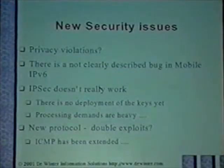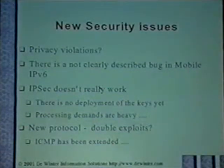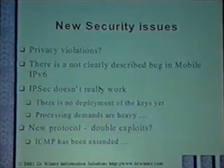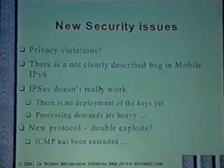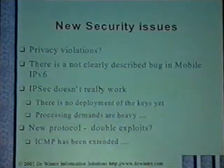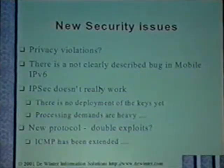With this new protocol, you run into double exploits. If I'm tunneling on IPv4, am I now all of a sudden more vulnerable? Or can I make the other site an IPv4 site and not have to do any authentication anymore, because it's not in IPv4? And don't forget, ICMP has been extended. So all the people that turned off ICMP are most likely, if they're going to use IPv6, going to have to turn it on again.